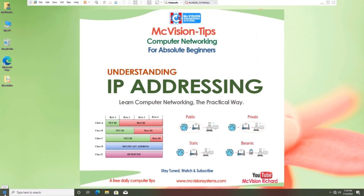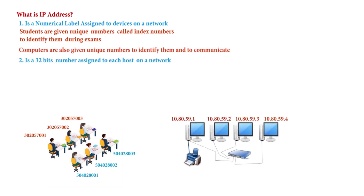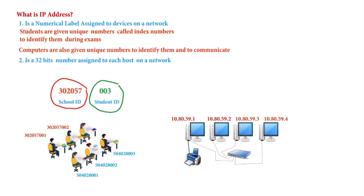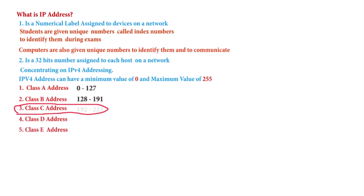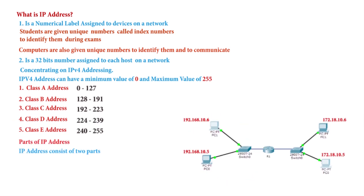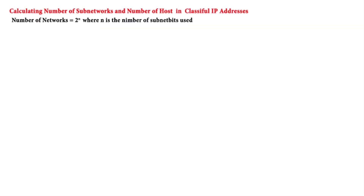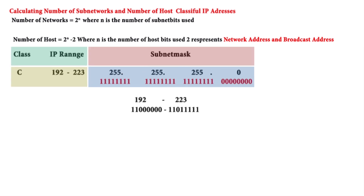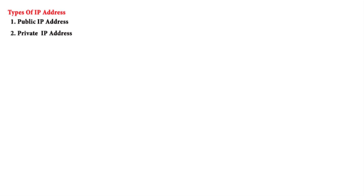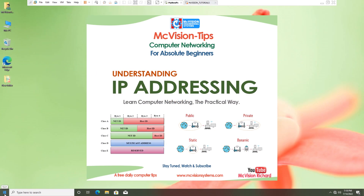To begin, let's remind ourselves of some key points from the previous lesson. We discussed what an IP address is from both a lay and technical point of view, used the student index number analogy, covered classes of IP addresses, the parts of an IP address, how to use subnet masks, how to calculate networks and hosts for classes A, B, and C, and the types of IPv4 addresses.